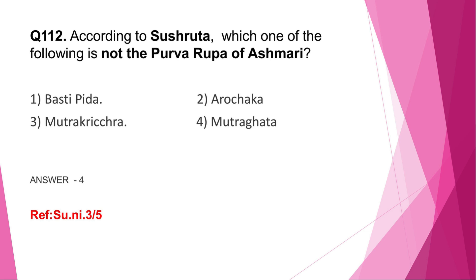Question number 112: According to Sushruta, which one of the following is not the Purvarupa of Ashmari — Vastipida, Arojaka, Mutra Krichra, or Mutra Ghata? The correct answer is option 4, Mutra Ghata. This is a direct question from Sushruta Ashmari Nidanam, and this is also the second question from the context of Ashmari.